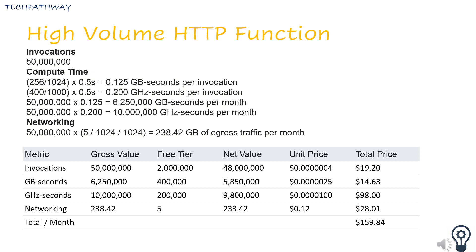Example 2: A medium complexity HTTP function with 256 MB of memory and a 400 MHz CPU, invoked 50 million times per month via HTTP, running for 500 ms each time and sending 5 KB of data back to the caller — 5 KB egress per invocation. The breakdown covers invocations, compute time, and networking.